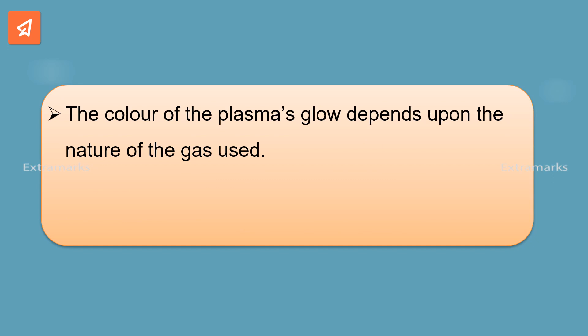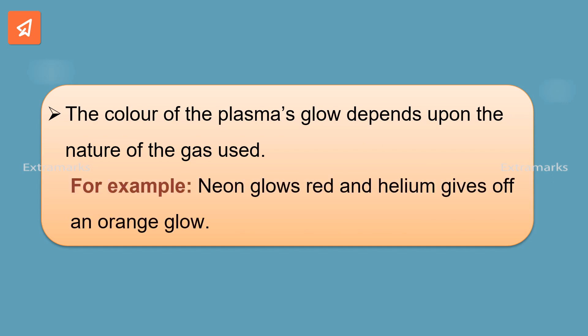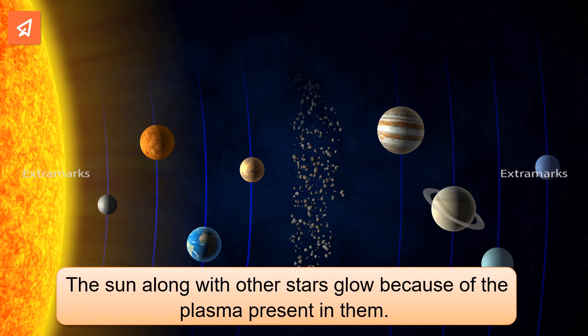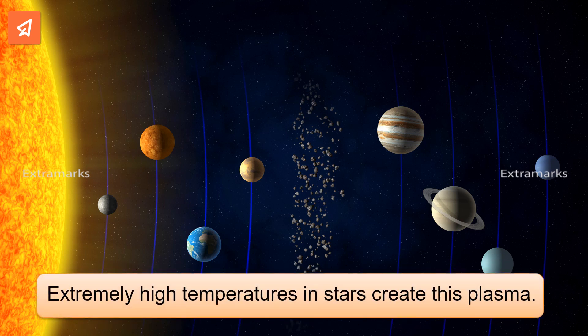For example, neon glows red and helium gives off an orange glow. It is interesting to know that the sun along with other stars glow because of the plasma present in them. Extremely high temperatures in stars create this plasma.